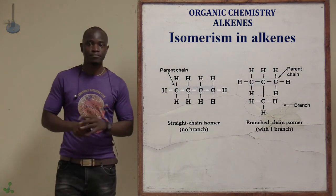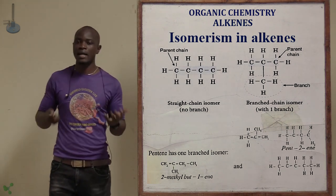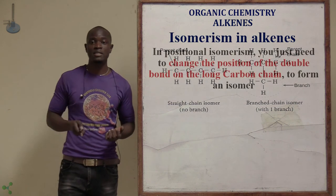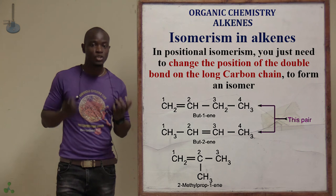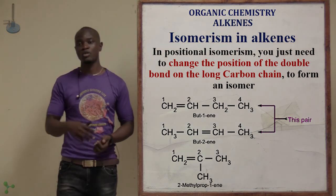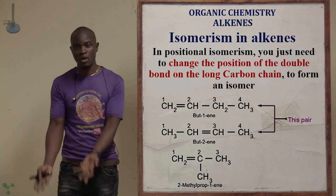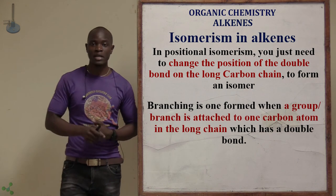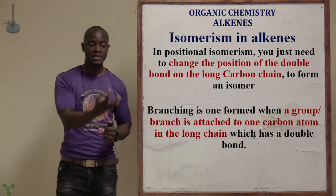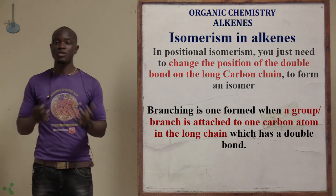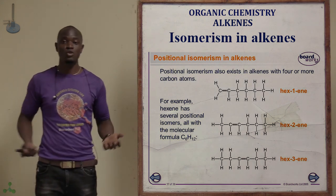For example, 2-methylbutene can be an isomer of pentene through branching isomerism. For positional isomerism, you simply change the position of the double bond — move it from carbon 1 to carbon 3, or from carbon 3 to carbon 4. That is positional isomerism.